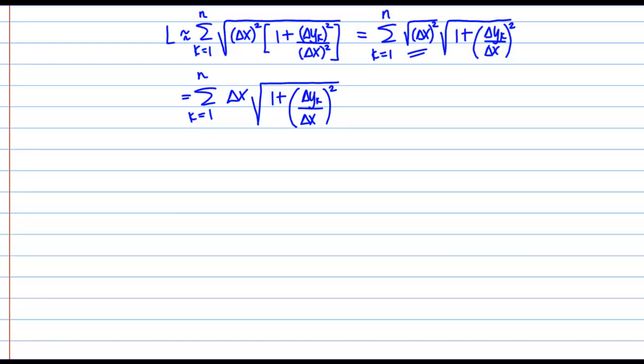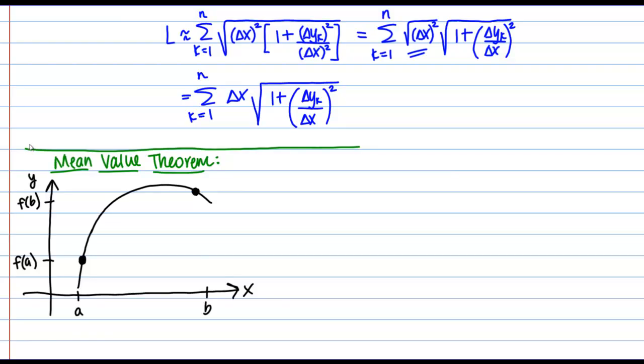Now we need to use a cool little trick. To do this, we have to recall the mean value theorem. Consider a curve like this one and a secant line through the points (a, f(a)) and (b, f(b)), a little secant line like this one. The mean value theorem states that at some point on this interval [a, b], there is a tangent line with the same slope as the secant line, like this one.